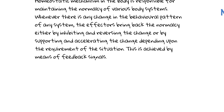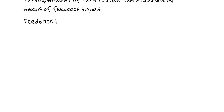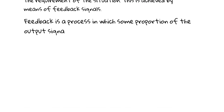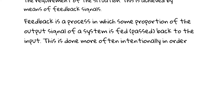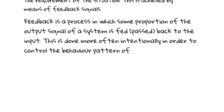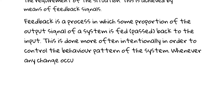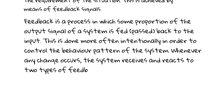Feedback is a process in which some proportion of the output signal of a system is fed back to the input. This is done more often intentionally in order to control the behavior pattern of the system. Whenever any change occurs, the system receives and reacts to two types of feedback.